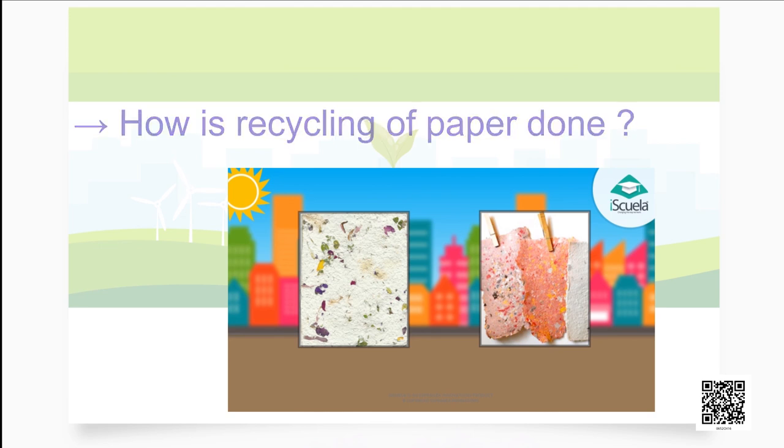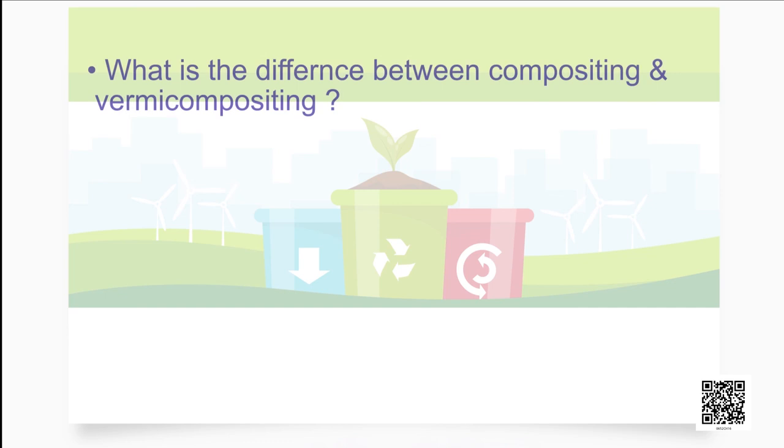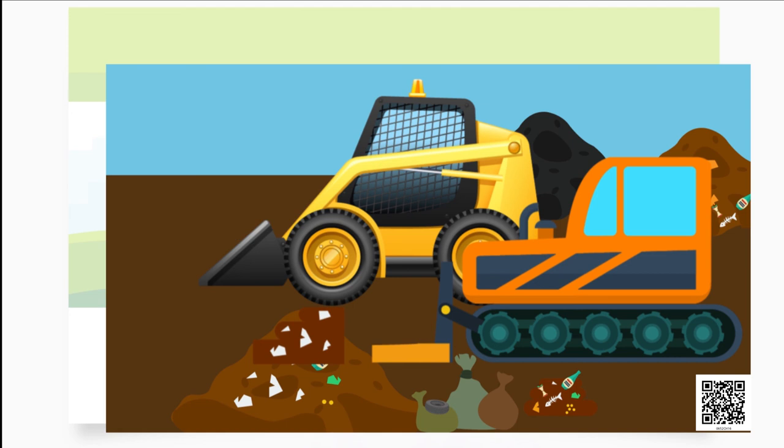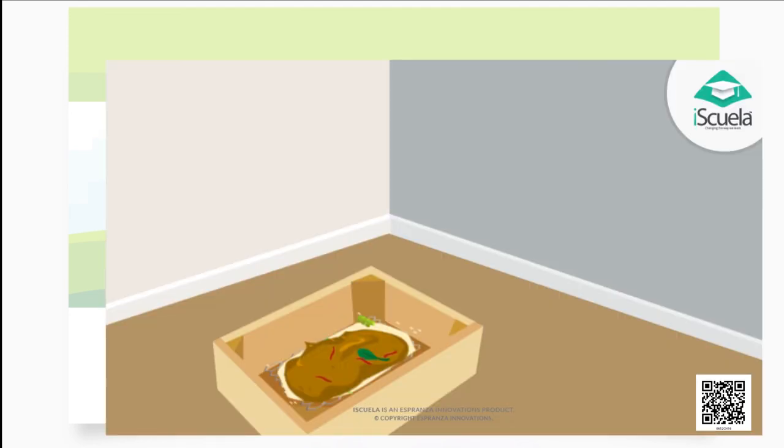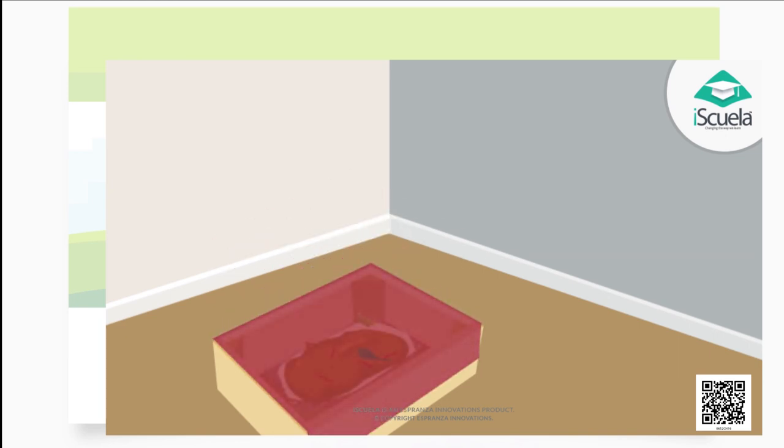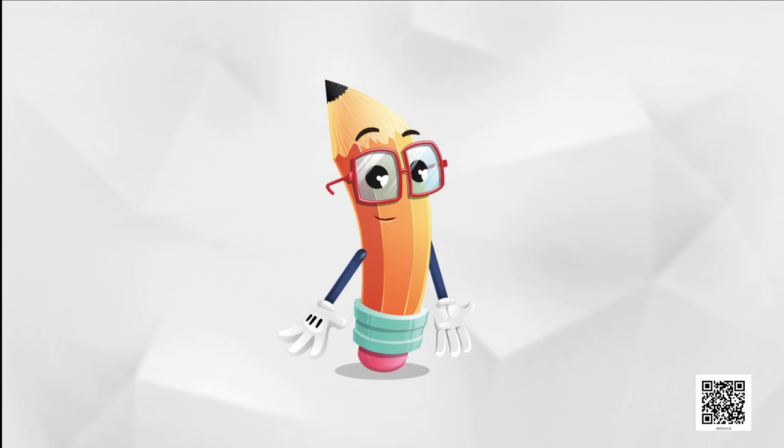Now your last question. Tell me children, what is the difference between composting and vermicomposting? In the process of composting, waste is converted to compost. Vermicomposting is also a type of composting. But the only difference is that in vermicomposting, waste is converted to compost with the help of red worms. And these red worms are not used in composting.